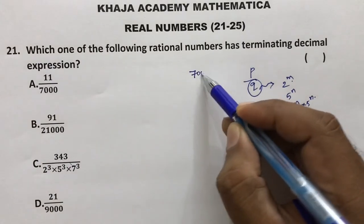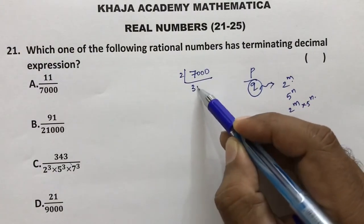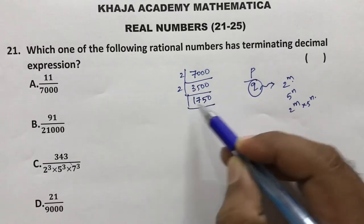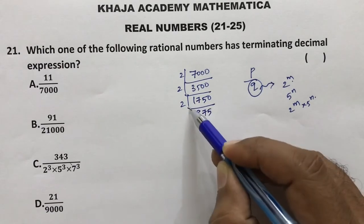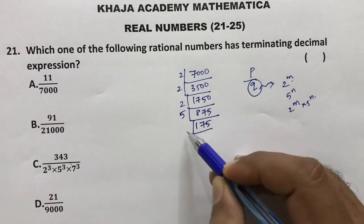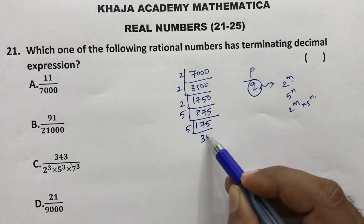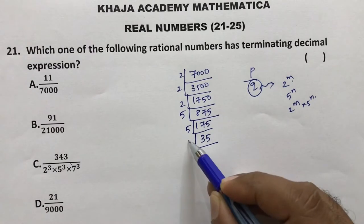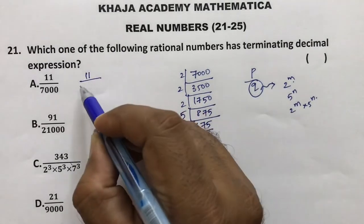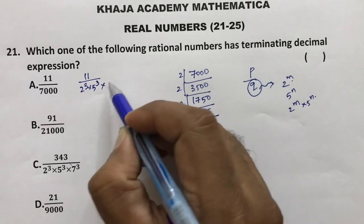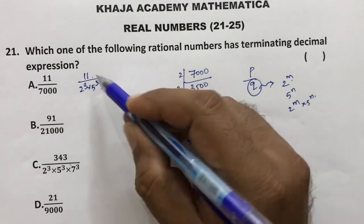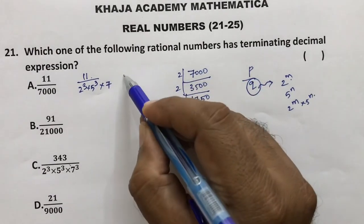For 11 by 7000, the prime factors of 7000 are: 2 × 3500, 2 × 1750, 2 × 875, then 5 × 175, 5 × 35, 5 × 7. So 7000 = 2³ × 5³ × 7. This gives 11 by 2³ × 5³ × 7. Since 7 and 11 will not cancel, it is non-terminating.